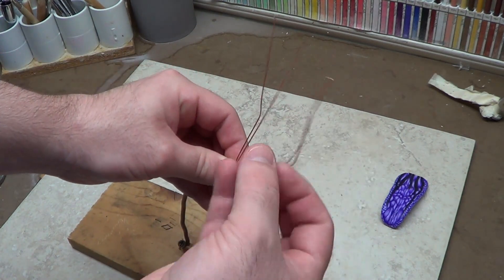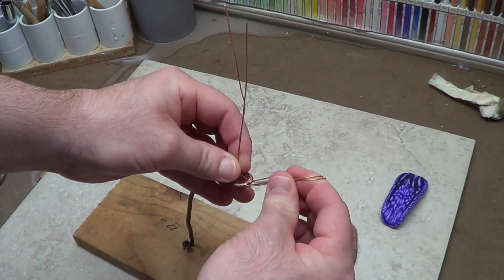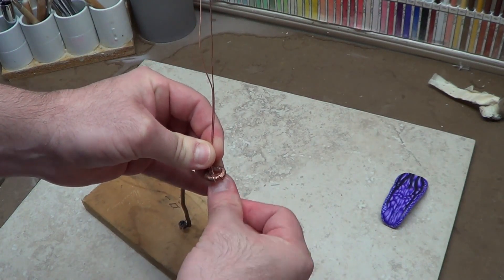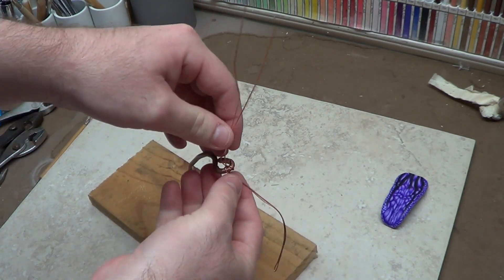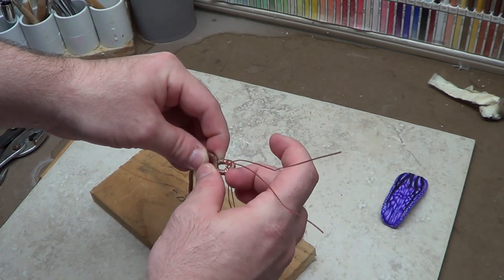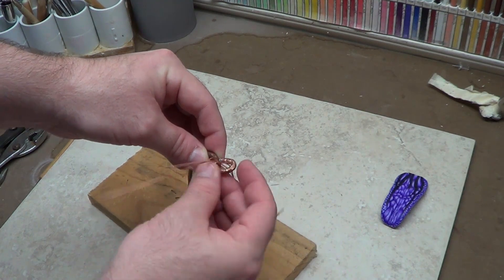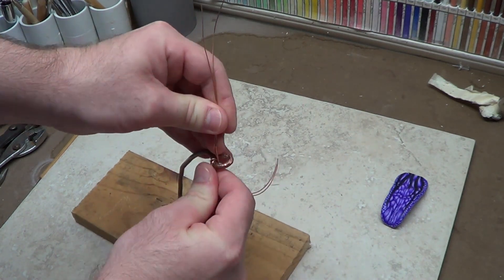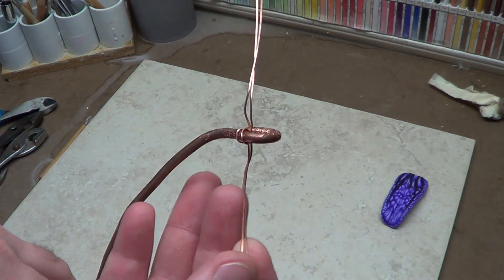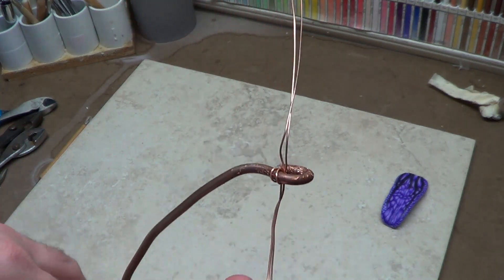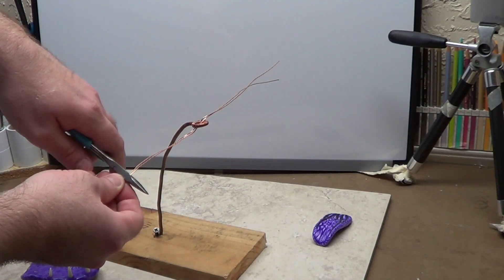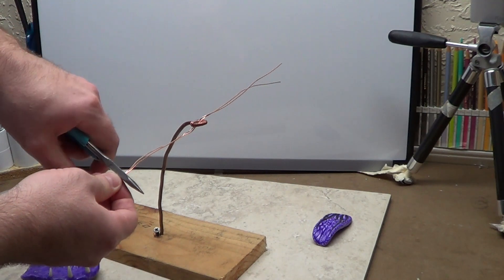And then stick half of it through. I just want to wrap it one good time. And I'll put it towards the back. Something like that. Real simple.